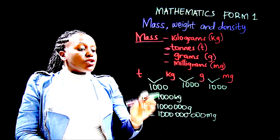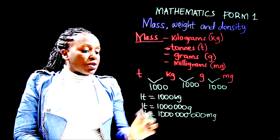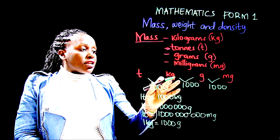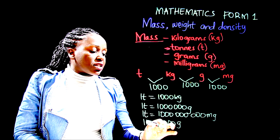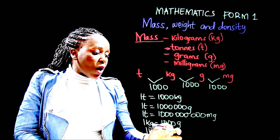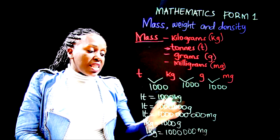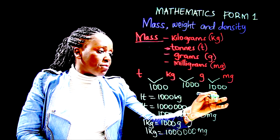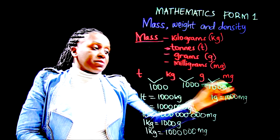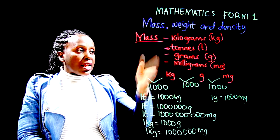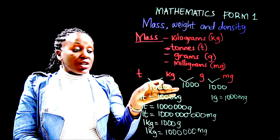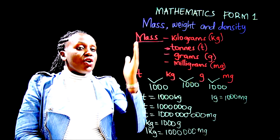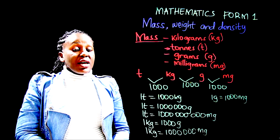To convert between any two units, use the thousands between them to develop the formula you need. One kilogram equals one thousand grams. From kilograms to milligrams, one kilogram equals one million milligrams. And one gram equals one thousand milligrams. Anytime you want to convert, recall this hierarchy starting with tons all the way to milligrams, with one thousand units between any two.